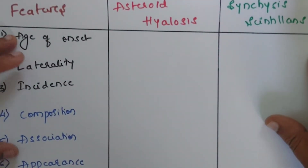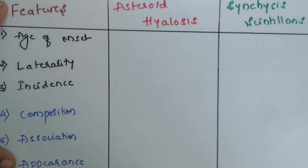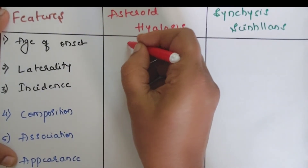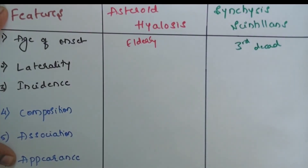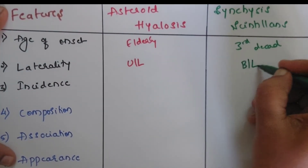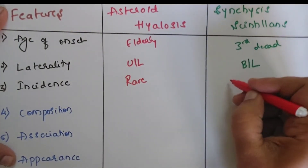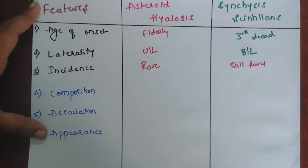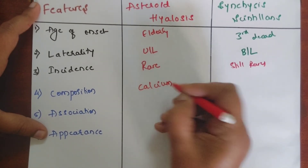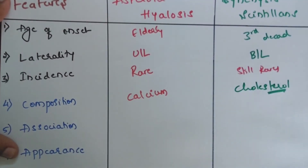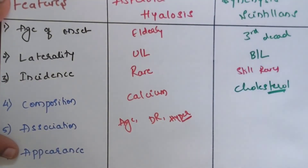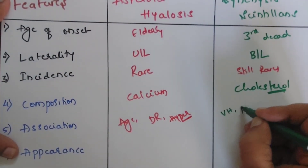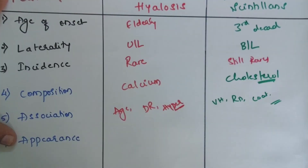Now the differences between Asteroid Hyalosis and Synchisis Scintillans, which can itself be a three-mark question. Age of onset: Asteroid Hyalosis is seen in the elderly, whereas Synchisis Scintillans is seen in the third decade. Laterality: Asteroid Hyalosis is unilateral in 75 to 90 percent of cases, whereas Synchisis Scintillans is usually bilateral. Incidence: Asteroid Hyalosis is rare, Synchisis Scintillans is still rarer. Composition: Asteroid Hyalosis crystals are calcium soaps or calcium lipids; Synchisis crystals are cholesterol. Association: Asteroid Hyalosis is associated with increasing age, diabetic retinopathy, or hypercholesterolemia.